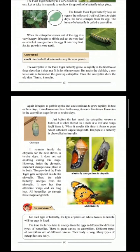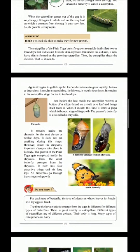The pupa of a butterfly is also called a chrysalis. It remains inside the chrysalis for the next 11 or 12 days. It does not eat anything during this stage. However, inside the chrysalis, important changes take place in its body. The growth of the plain tiger gets completed inside the chrysalis. Then the adult butterfly emerges from the chrysalis — it now has four attractive wings and six long legs. All butterflies go through these stages of growth.